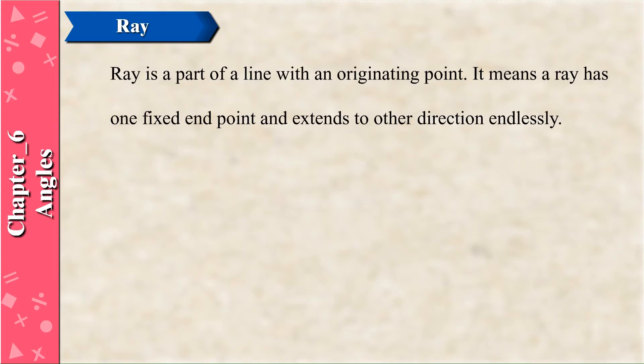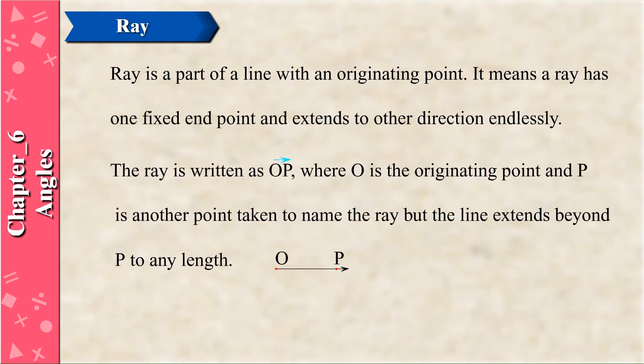Ray: A ray is a part of a line with an originating point. A ray has one fixed end point and extends in the other direction endlessly. The ray is written as ray OP, where O is the originating point and P is another point taken to name the ray, but the line extends beyond P to any length.